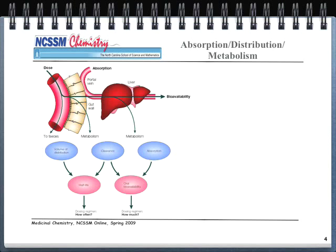Here's a schematic of absorption, distribution, and metabolism. The graphic shows the dose coming through the blood system, absorbing through the gut wall and into the liver. Once through the liver, the drug is considered bioavailable. Key parameters include volume of distribution, clearance, and absorption — all influencing oral bioavailability. Essentially, we're trying to answer: how much drug do we need to give the patient to achieve the desired effect?